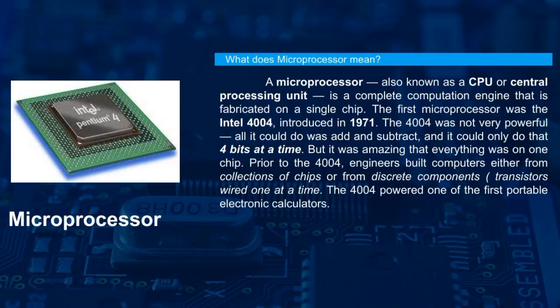A microprocessor, also known as a CPU or central processing unit, is a complete computation engine fabricated in a single chip. The first microprocessor was the Intel 4004, introduced in 1971. The 4004 was not very powerful — all it could do was add and subtract, and it could only do that 4 bits at a time.